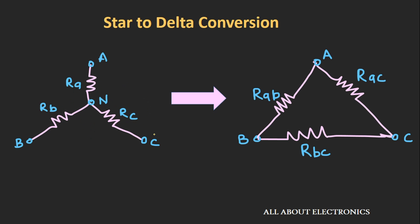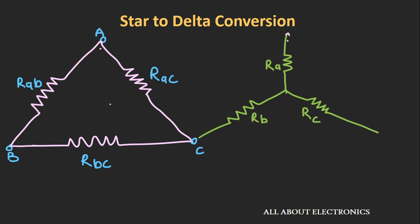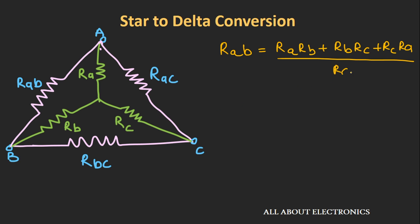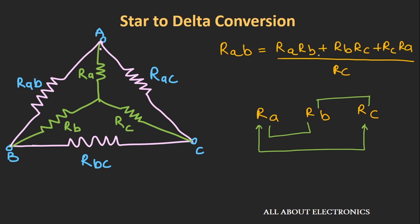So here Ra, Rb and Rc are the resistors of this star network and we want to convert this star network into the equivalent delta network. Rab, Rac and Rbc are the resistors of this equivalent delta network. The first step is to draw this star network inside this delta network. Now, Rab can be given as: Rab equals Ra·Rb plus Rb·Rc plus Rc·Ra, divided by Rc. The technique for writing these expressions is: in the star network we have three resistors Ra, Rb and Rc — multiply two resistors at a time and add them all together to get the numerator.